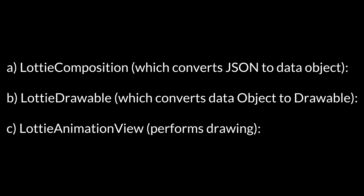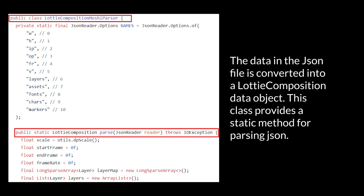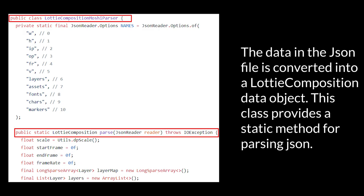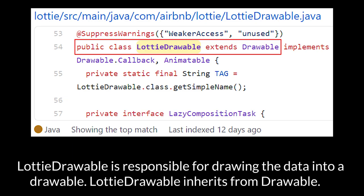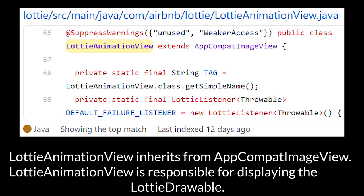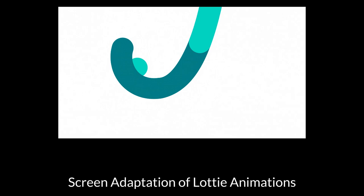The following is a description of the three core classes in Lottie Android. A. LottieComposition — converts JSON to a DataObject. B. LottieDrawable — converts DataObject to Drawable. C. LottieAnimationView — performs drawing. The data in the JSON file is converted into a LottieComposition data object; this class provides a static method for parsing JSON. LottieDrawable is responsible for drawing the data into a Drawable and inherits from Drawable. LottieAnimationView inherits from AppCompatImageView and is responsible for displaying the LottieDrawable.